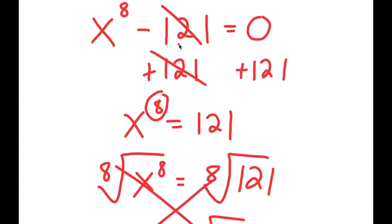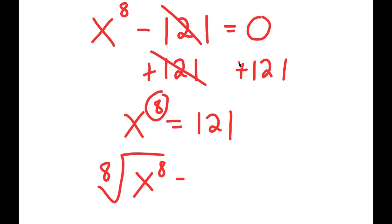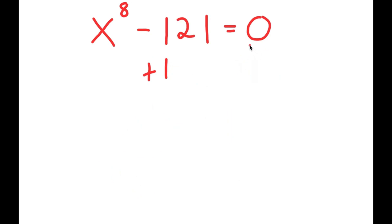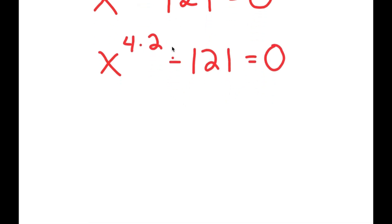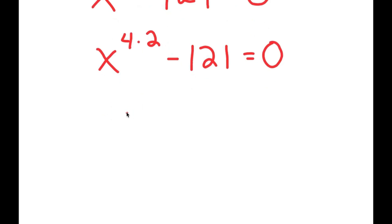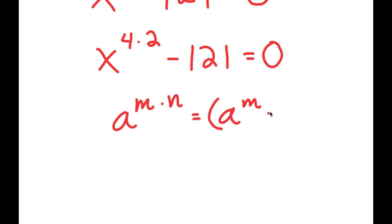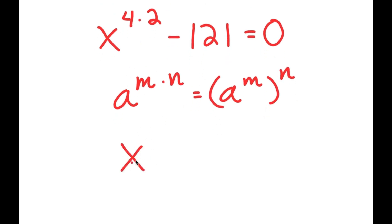We want to find all of the solutions to this equation. Our first step is to rewrite x to the power of 8 as x to the power of 4 times 2. Now, if I have something in the form a to the power of m times n, this is equal to a to the power of m to the power of n. So x to the power of 4 times 2 is equal to x to the power of 4, to the power of 2.